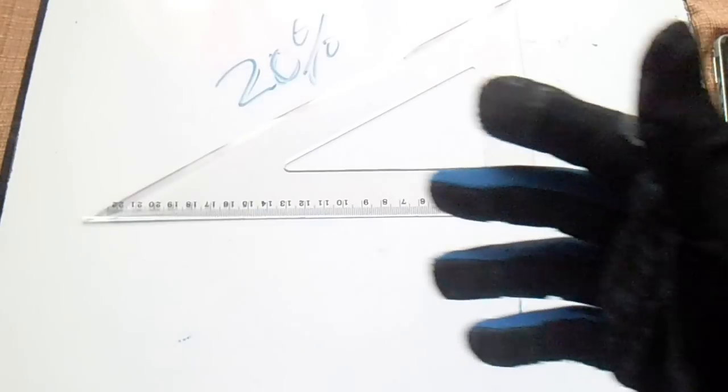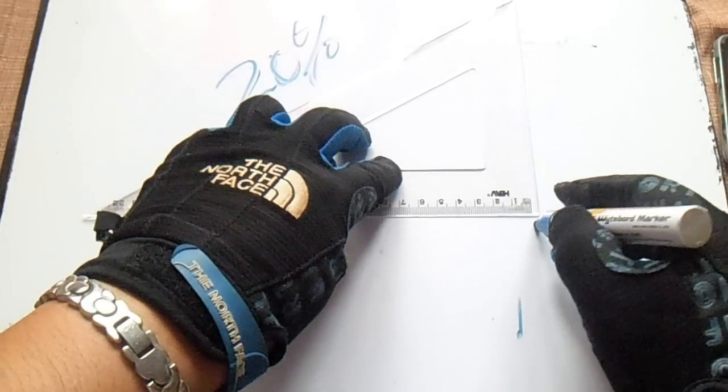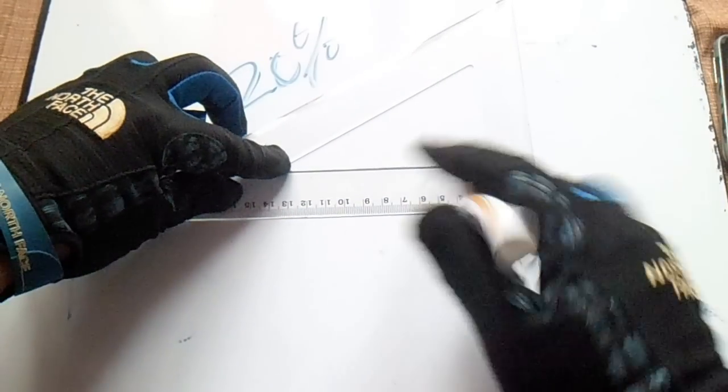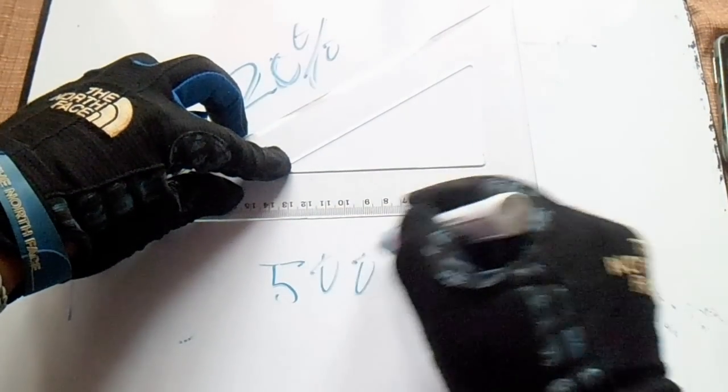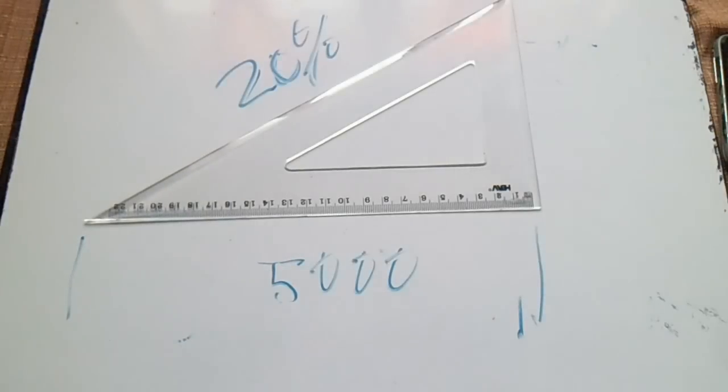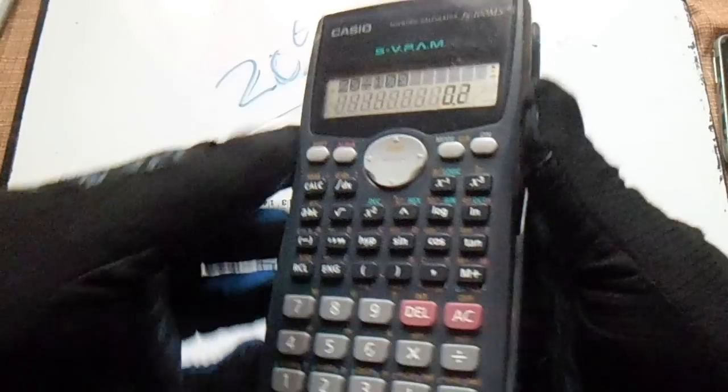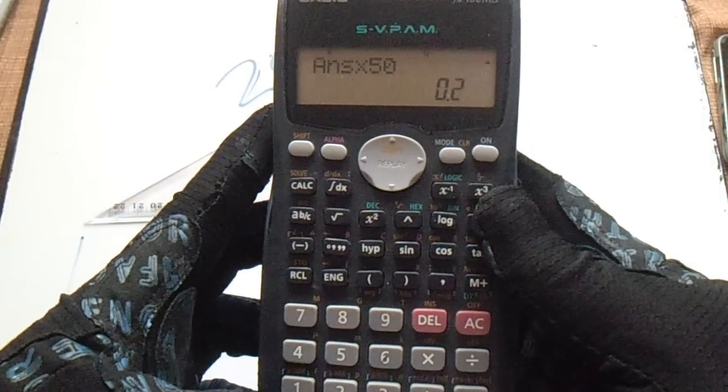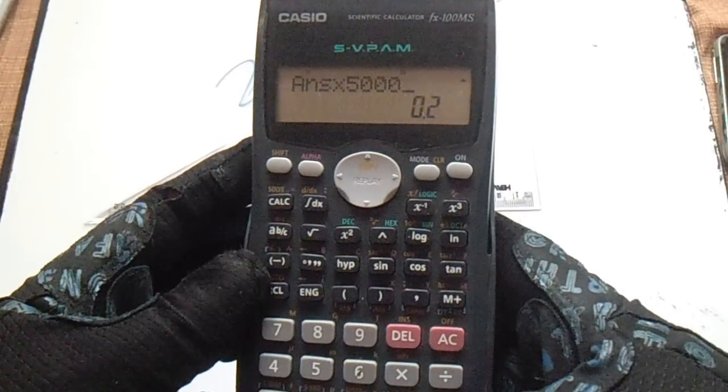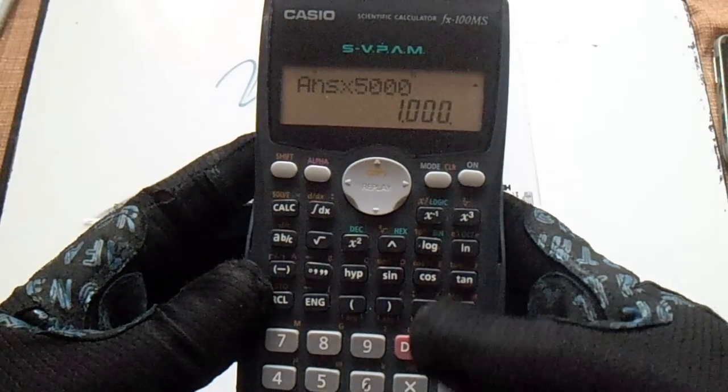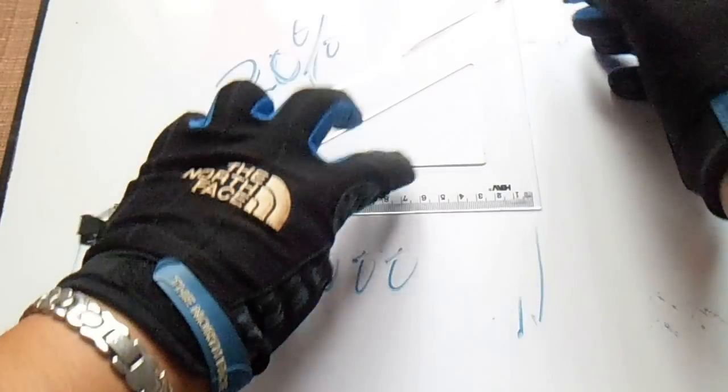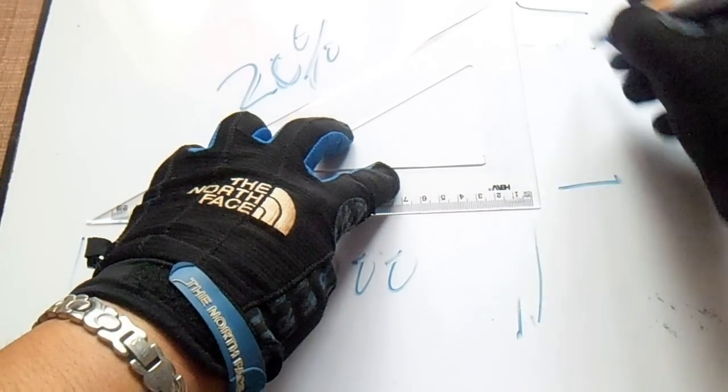Let's say we have a dimension here of 5000. So 0.2 multiplied by 5000 equals 1000mm slope from here.